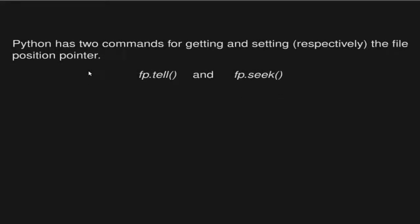Python has two commands for getting and setting where my file position pointer is. The first one, for getting exactly my position in the file at that moment, is called fp.tell(). The fp indicates that's my file object, and fp.tell() returns how many bytes I am into the file. Now if I want to go to a particular place in the file, I would use the command fp.seek(), giving it an argument of however many bytes I wish to go into the file, and fp.seek() will send me there.